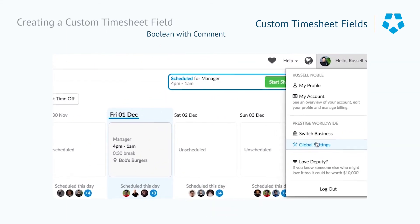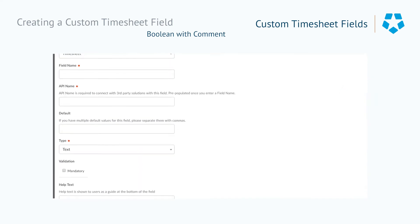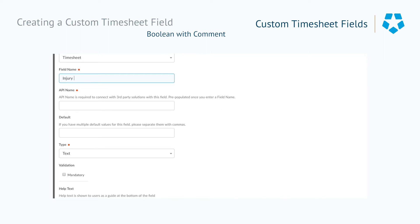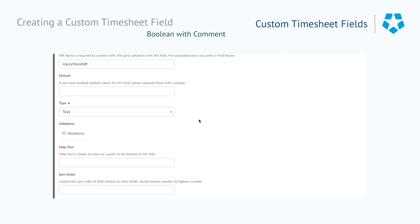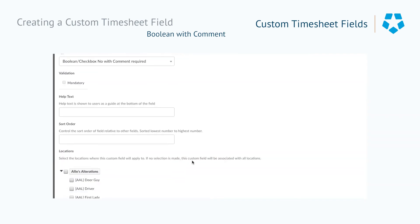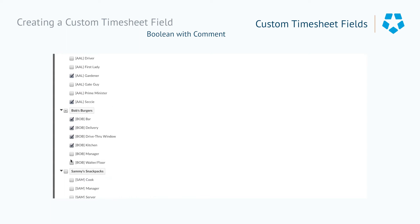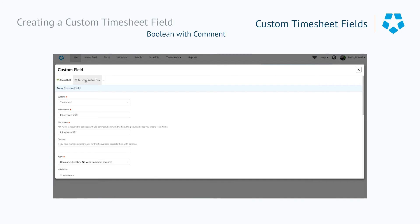Now we're going to look at creating a Boolean with 'no add comment required' field. We'll select the system again being timesheet and give this one a field name — 'injury free shift,' which will filter down to the API name. We'll select the type: in this instance a Boolean checkbox 'no with comment required' or Boolean checkbox 'yes with comment required.' This will force the person to leave a comment based on their answer. The help text section is where we put in the question — 'Did you have an injury free shift?' — and we'll make it mandatory, then choose our areas of work and save the custom field.